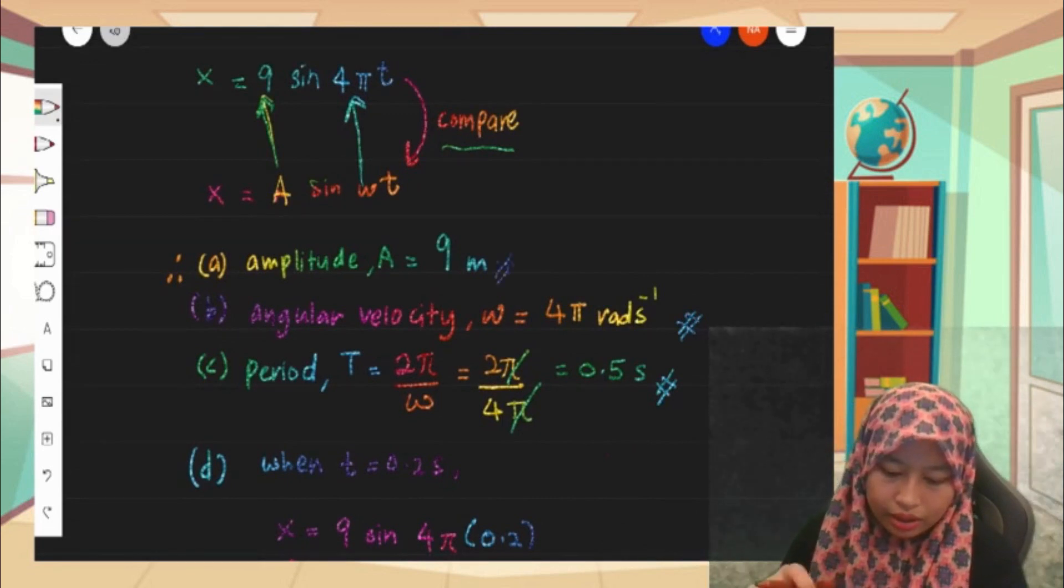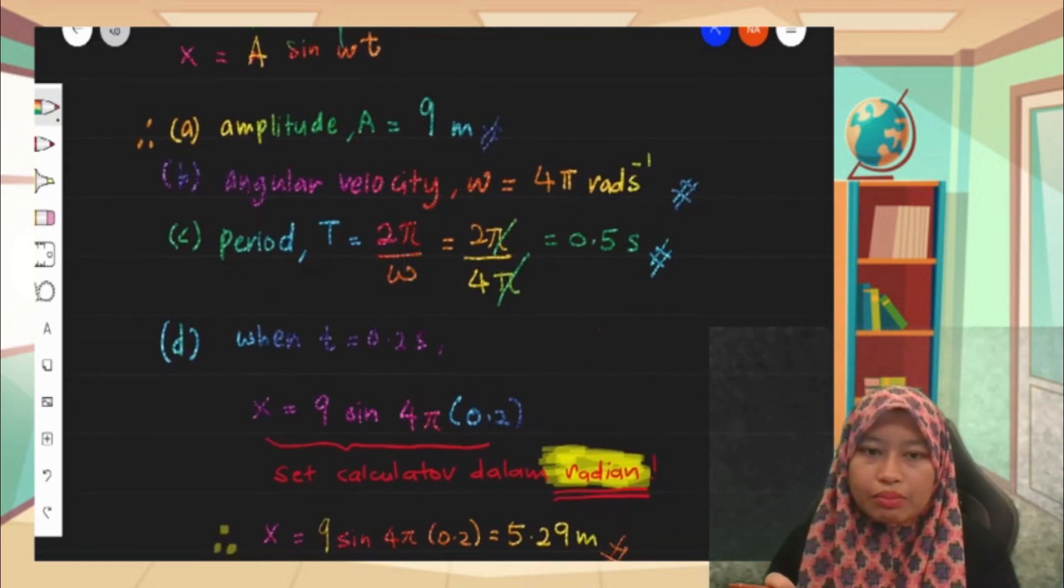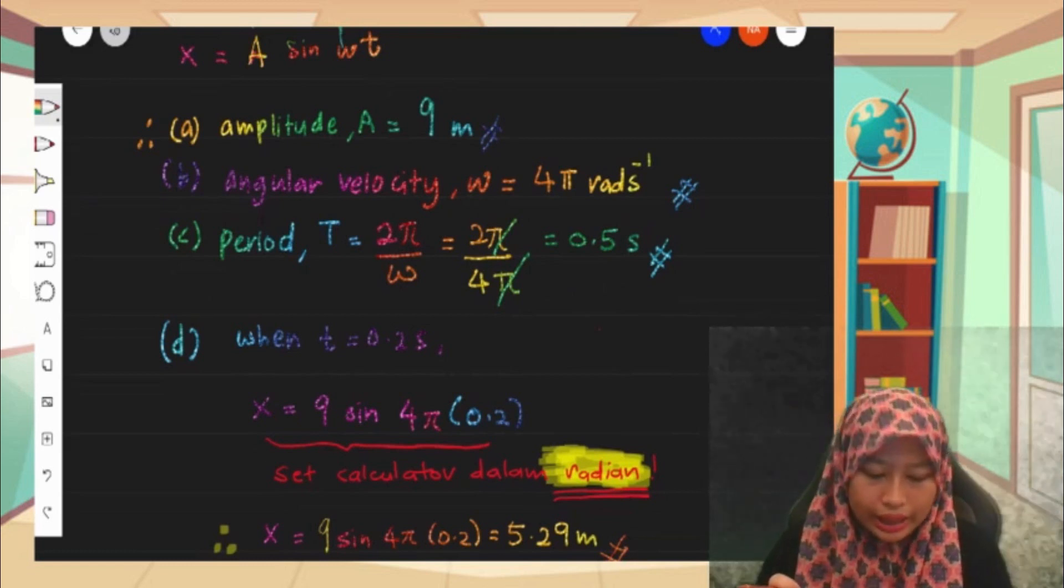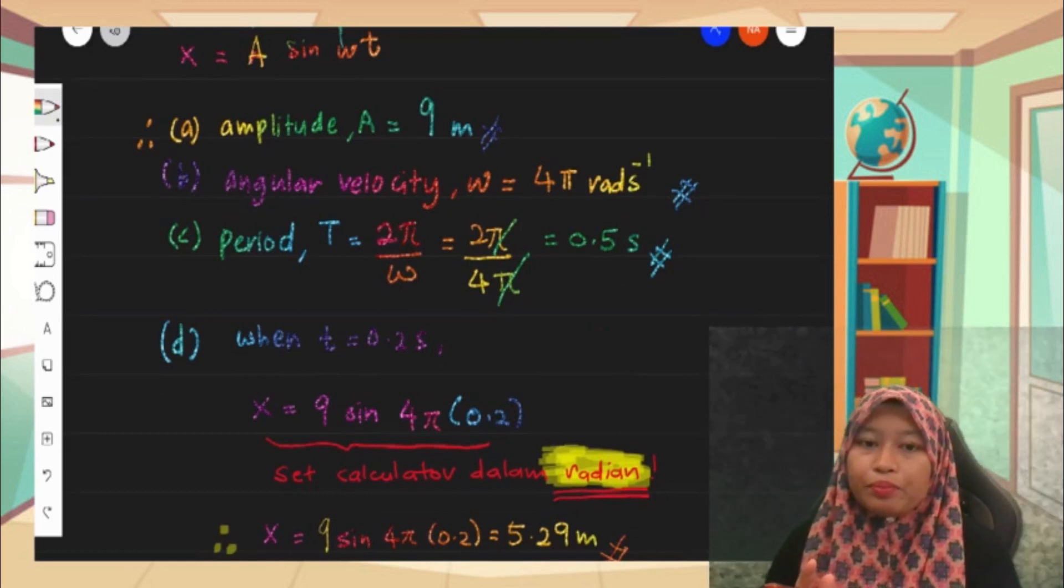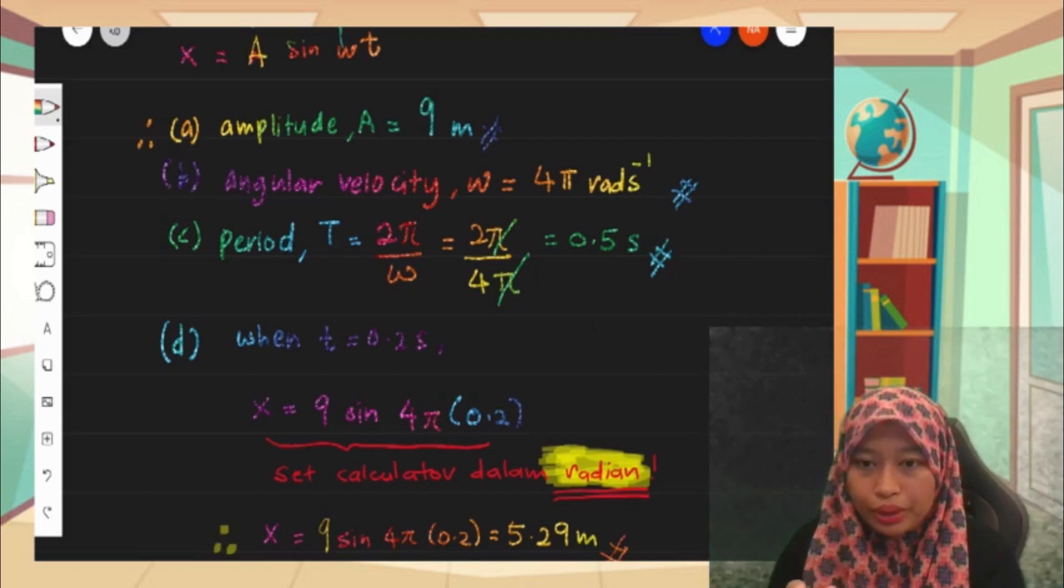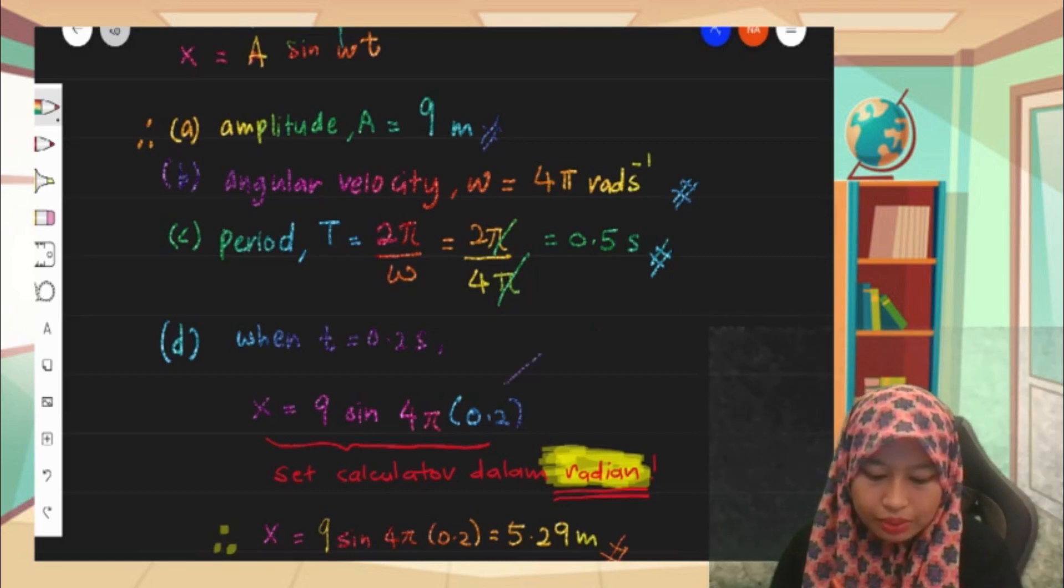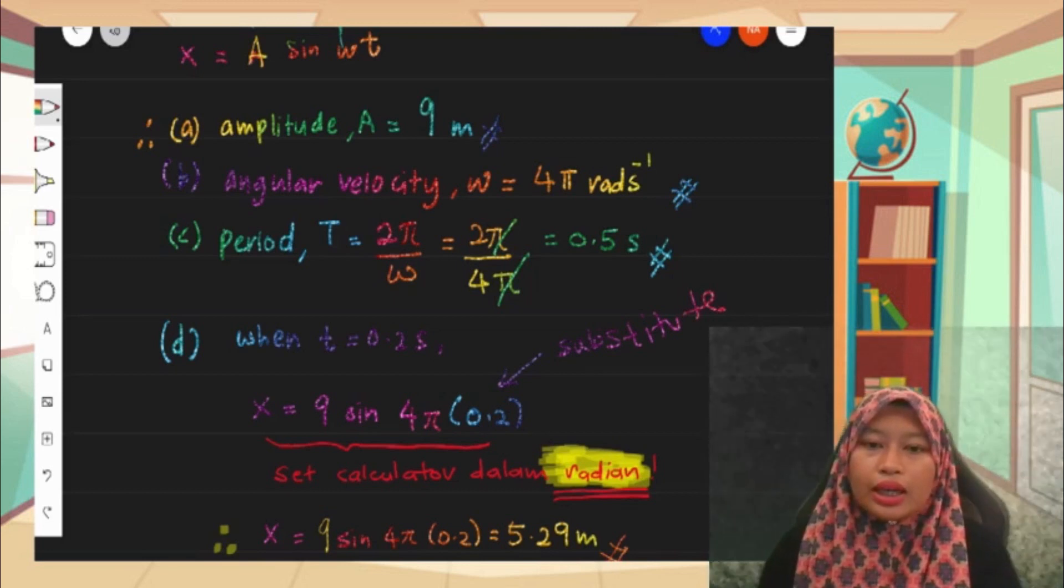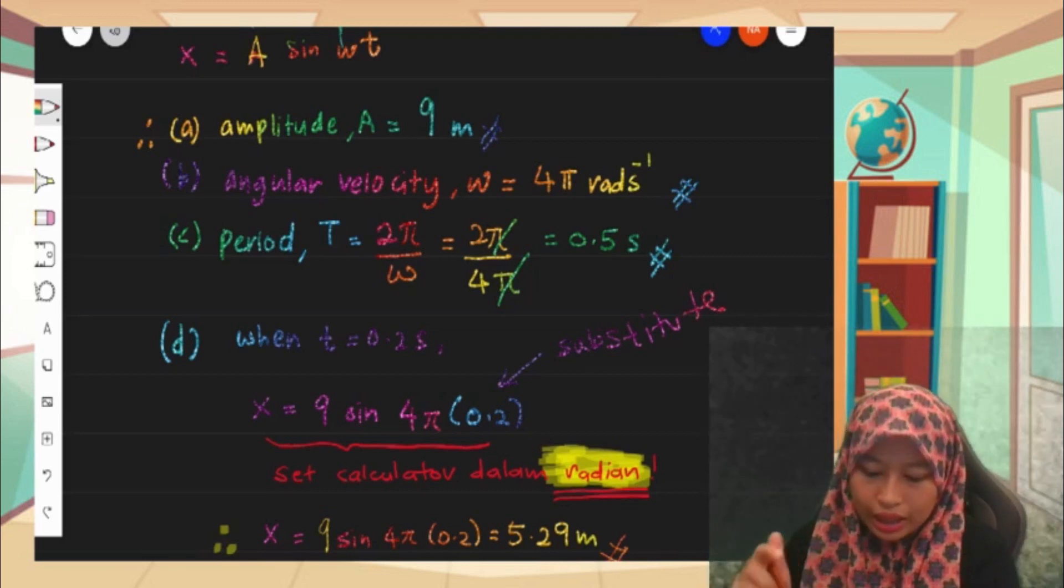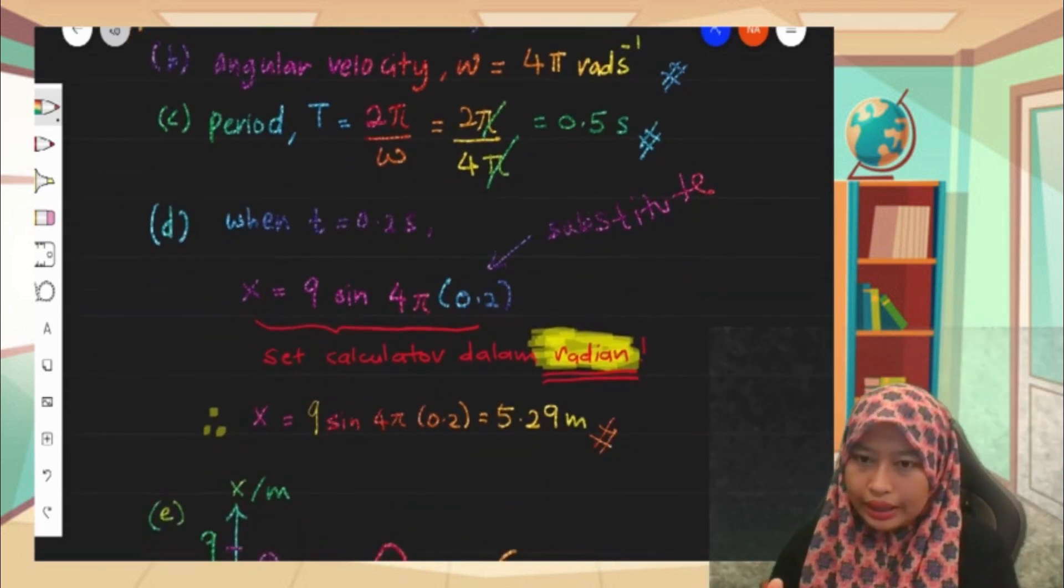Question D, the question asks for displacement when time is equal to 0.2 second. The technique here is you set your calculator in radian. Whenever you are in oscillation topic, make sure your calculator is set in radian. So just substitute the value of 0.2 here for the time, and then just press your calculator. But make sure the calculator is in radian, so that you can get the answer 5.29 meter.